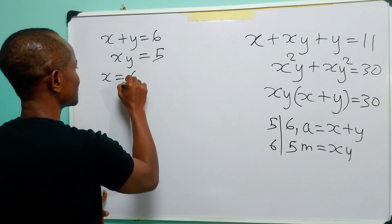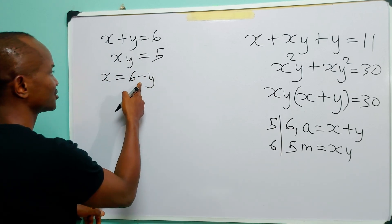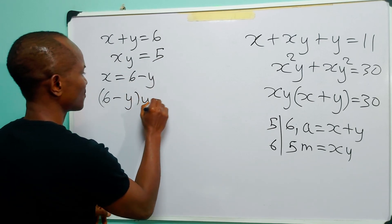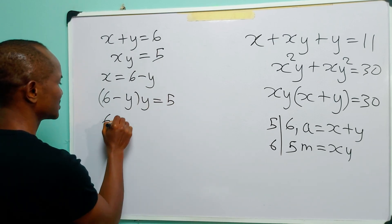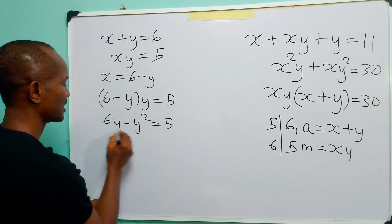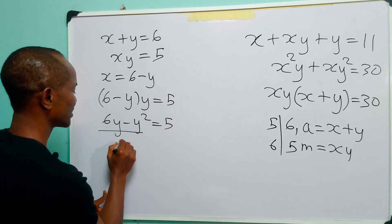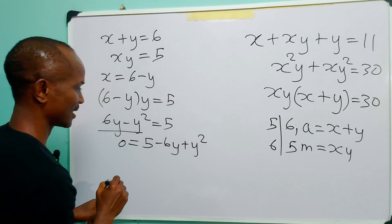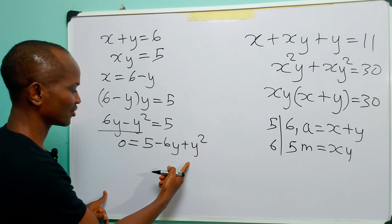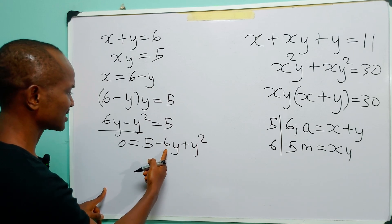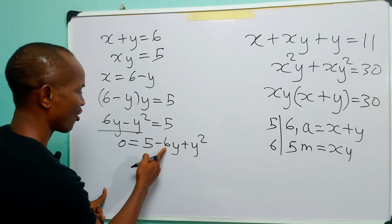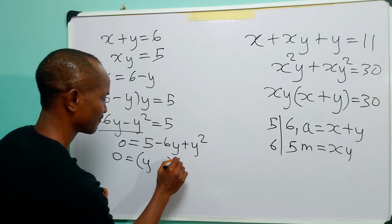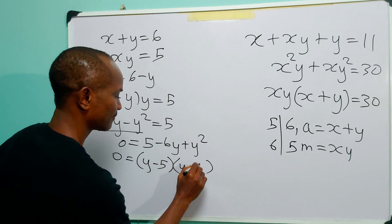From this we have x is equal to 6 minus y. Substituting this into the second equation, we have 6 minus y times y is equal to 5. Opening brackets, we have 6y minus y squared is equal to 5. Sending everything over to the right hand side, we have 0 is equal to 5 minus 6y plus y squared. We can factorize this quadratic with factors minus 5 and minus 1, giving us y minus 5 and y minus 1.